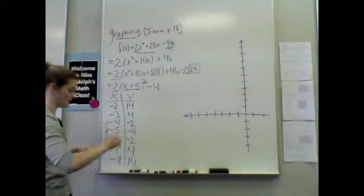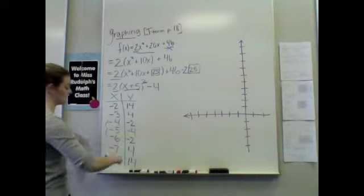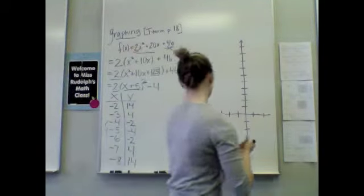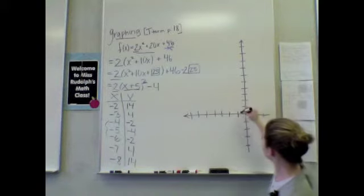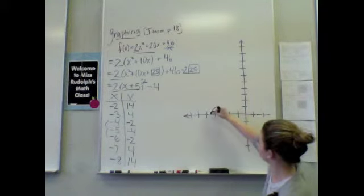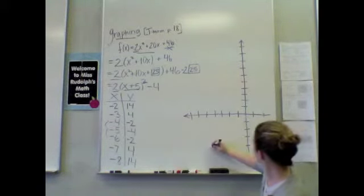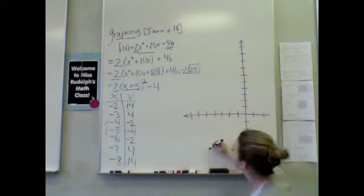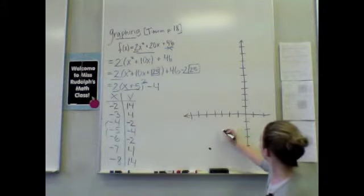Alright. So, I can now take my points and plot them on the graph. Starting with my vertex of negative 5. 1, 2, 3, 4, 5. Negative 4 all the way down here. So, we have negative 4. We're also at negative 2.